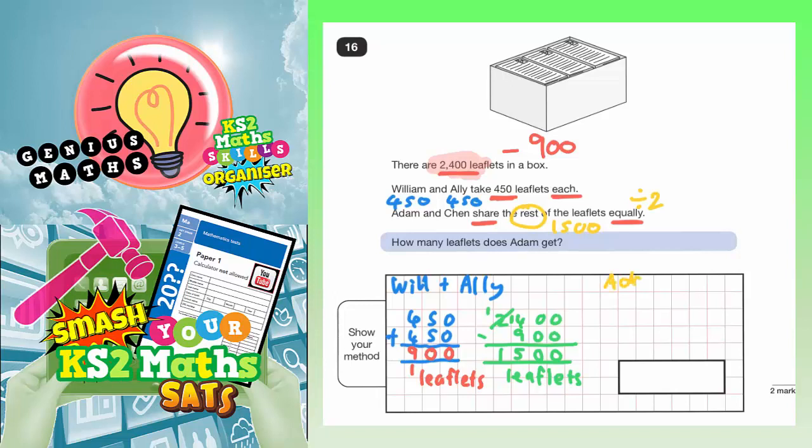Adam and Chen, that's 1,500 divided by 2. Now, a lot of you will be able to do that in your head, but if you can't do it in your head, a quick bus shelter method would help us out. 2s into 1 won't go, but you haven't really used the 1 yet because it wouldn't go in, so you carry the 1. 2s into 15 goes 7 remain 1.